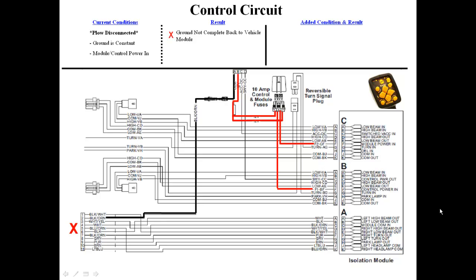The plow lights are not plugged in, so the ground path is not complete to the isolation module. Also, the switched accessory circuit is not activated. Either of these two conditions will result in the cab control not getting power.